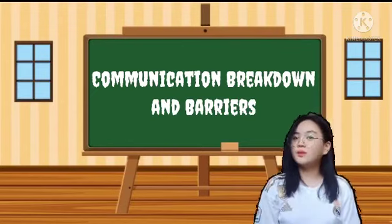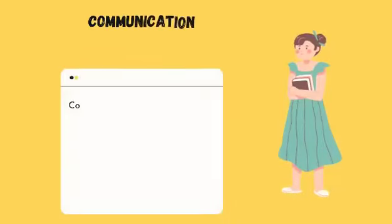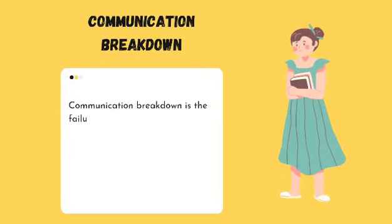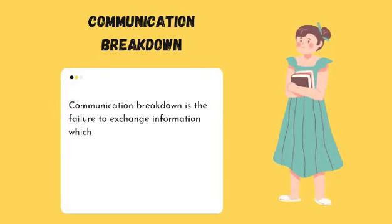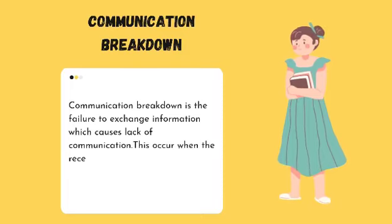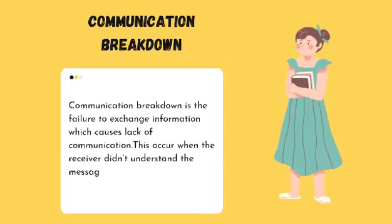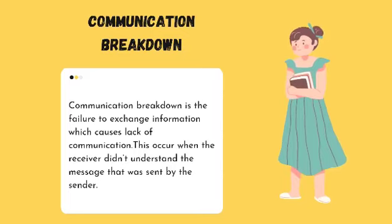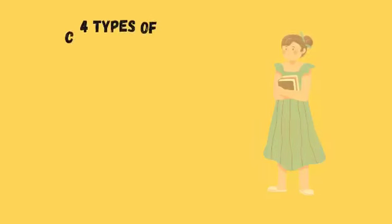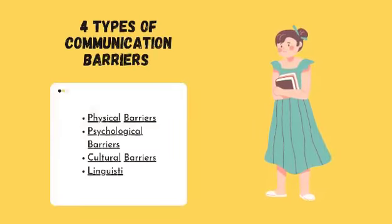What is communication breakdown? Communication breakdown is a failure to exchange information which causes lack of communication. This occurs when the receiver didn't understand the message that was sent by the sender. We have four different types of communication barriers.